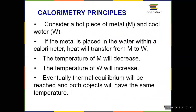What are our principles of calorimetry? Let's think about if we had a hot piece of metal, represented by M, put into cold water, represented by W. We established in the first video from Chapter 5 that things spontaneously reach thermal equilibrium — thermal energy is transferred from things that have high thermal energy to things that have low thermal energy. So if hot metal is placed into cool water, thermal energy goes from the metal to the water, meaning the temperature of the metal decreases and the temperature of the water increases until they reach thermal equilibrium.